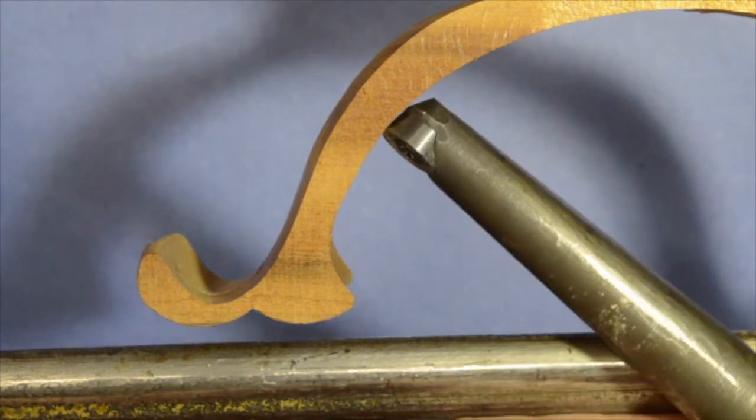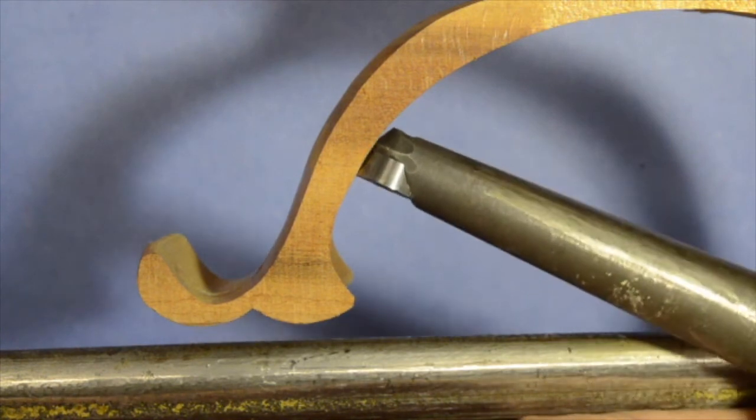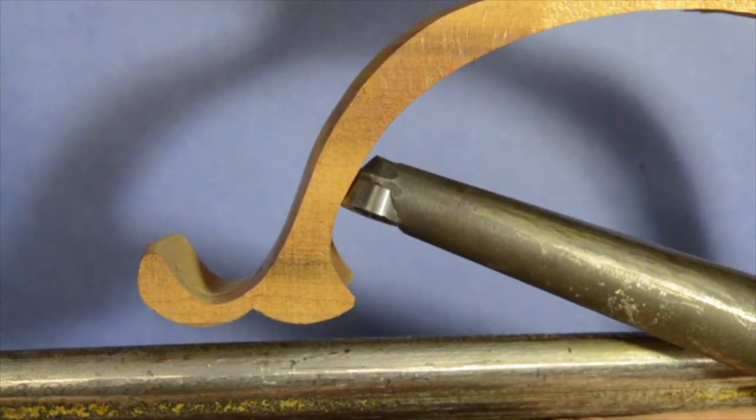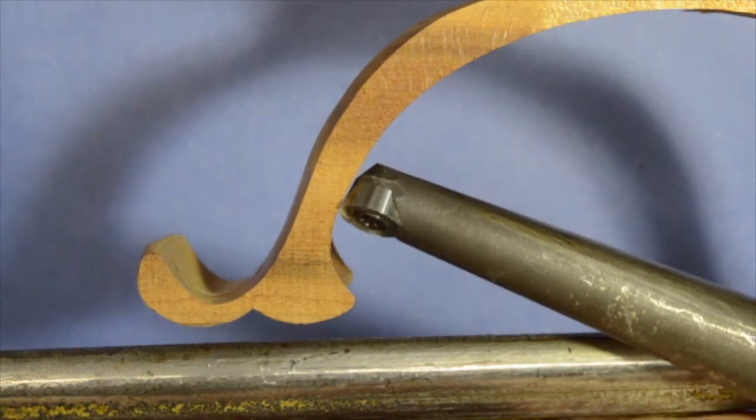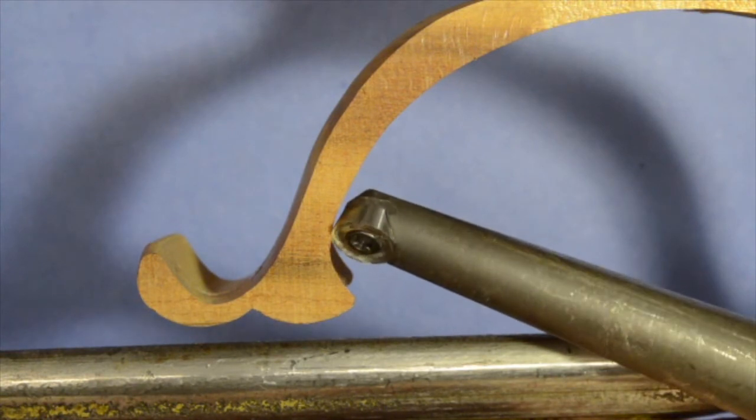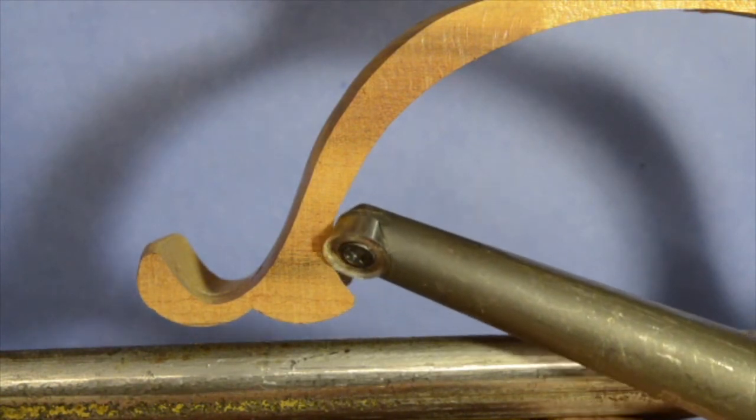So again, I come out here, I find the bevel, come across the bowl. As I get up toward that corner, I flatten it out slightly, bring it back up like that.